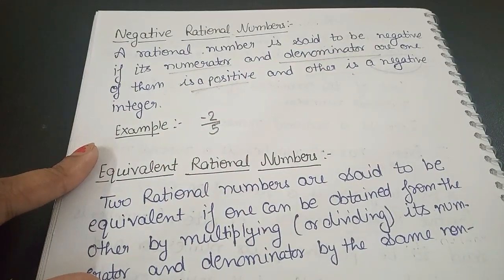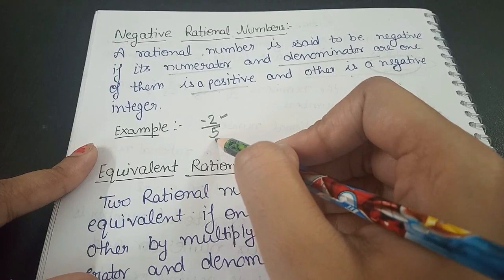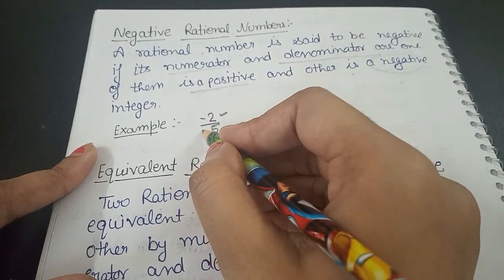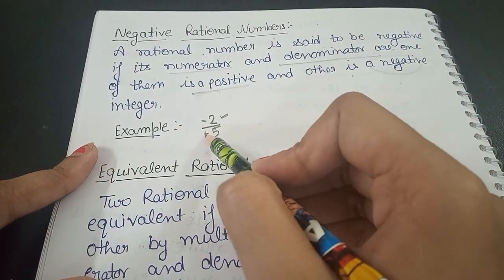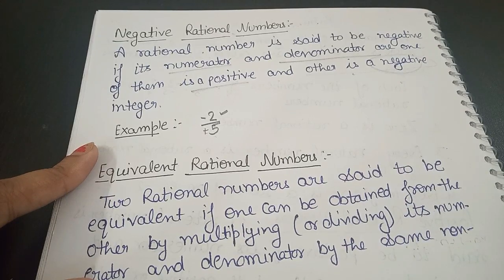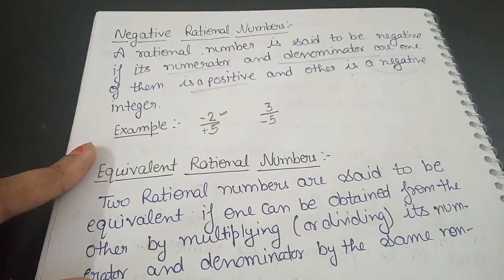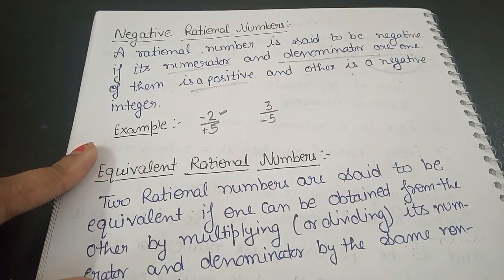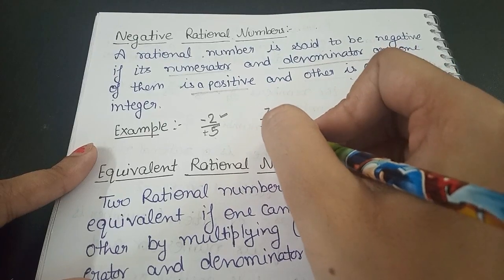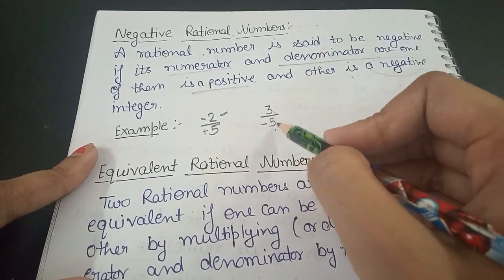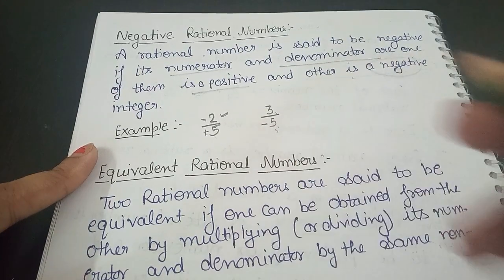In (-2)/5, the numerator is negative and the denominator is positive — when there is no sign in front of a number, it is positive. So one value is negative and one is positive, making it a negative rational number. Similarly, 3/(-5) is also a negative rational number, because the numerator is positive (+3) and the denominator is negative (-5).